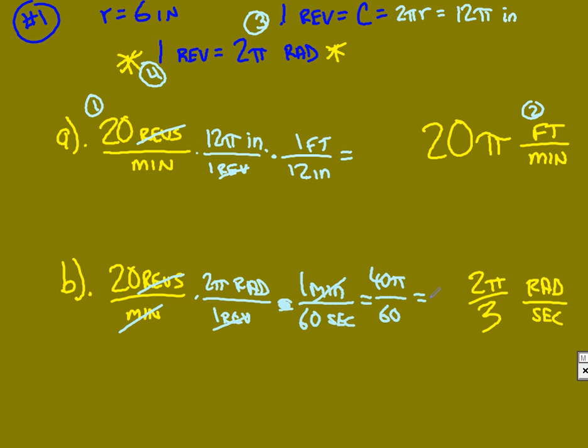So follow these steps. Step one, write what you know. Step two, write the units you need to get it in. Step three, figure out your circumference, because that is what one revolution is, is just the circumference. And then the last part, always figure out for radians, if we need to go angular velocity, that one rev is always just 2π radians.